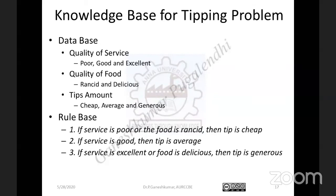Taking the first parameter — quality of service — it is divided into three linguistic variables: Poor, Good, and Excellent. Likewise, quality of food is divided into two linguistic variables: Rancid and Delicious. The output variable Tips is divided into three linguistic variables: Cheap, Average, and Generous. Once this partitioning of input and output variables into linguistic variables is done, the linguistic variables Poor, Good, Excellent, Rancid, Delicious, Cheap, Average, and Generous are all linguistic variables.